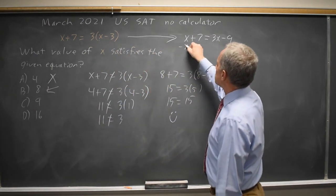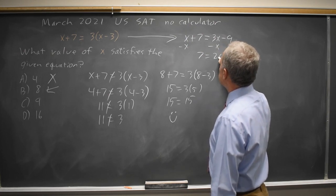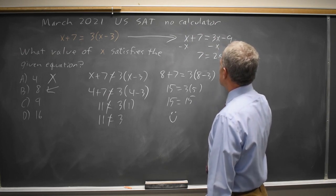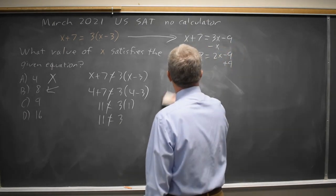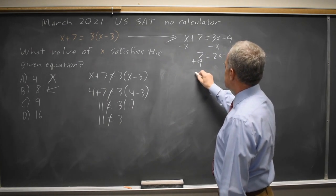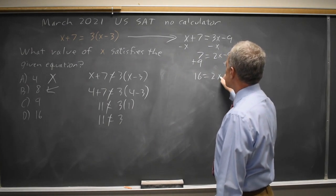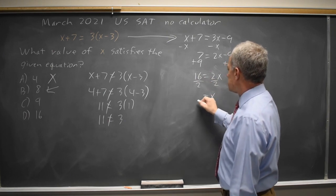Subtracting x from both sides, I get 7 equals 3x minus x is 2x minus 9. Add 9 to both sides. 7 plus 9 is 16 equals 2x. Divide both sides by 2 to get the x by itself. x equals 16 over 2 is 8. Same answer.